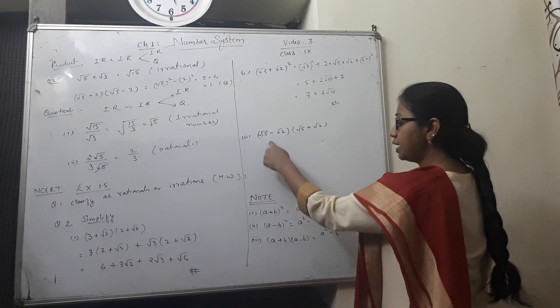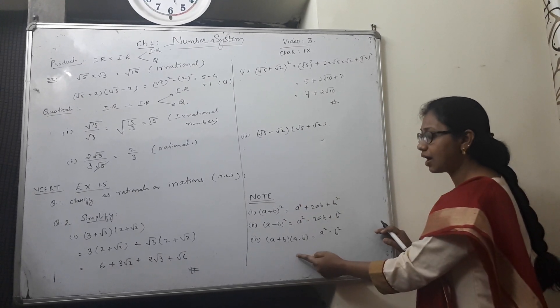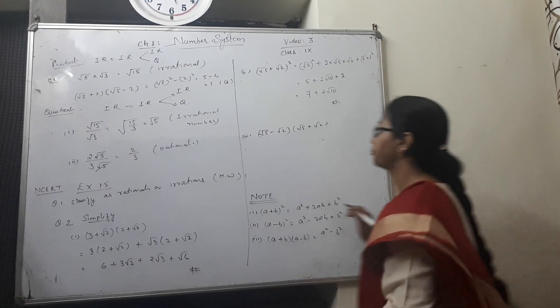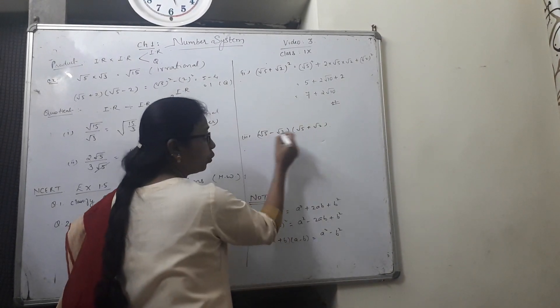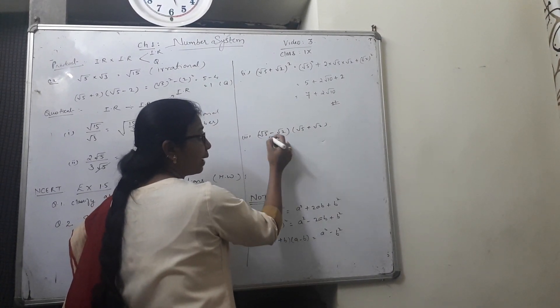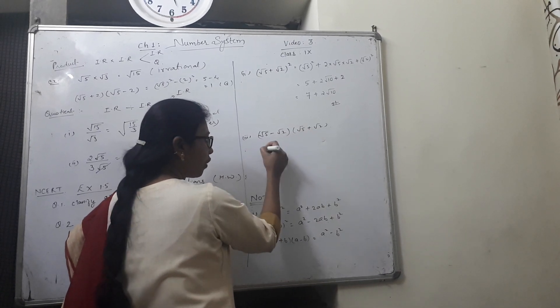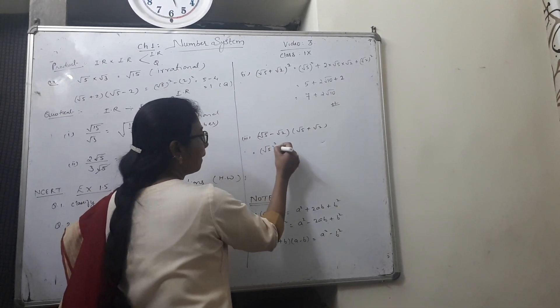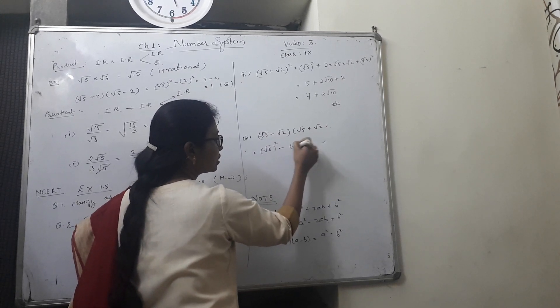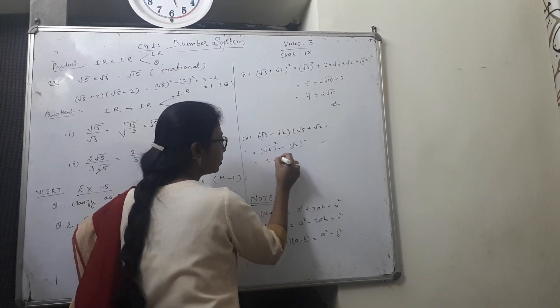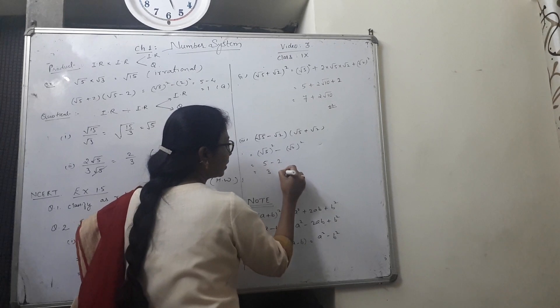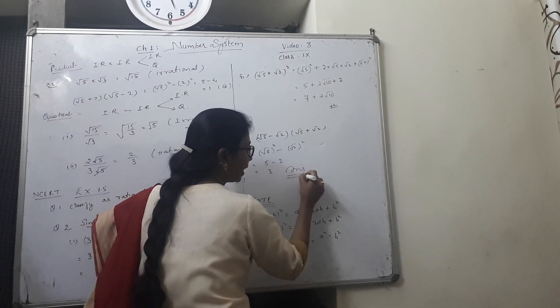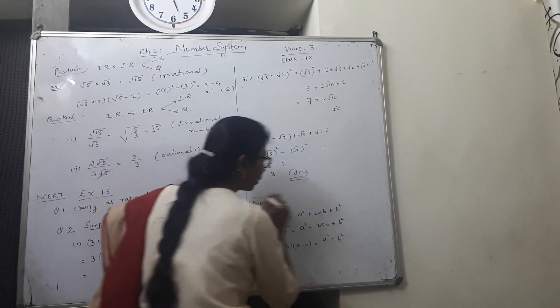For question number 3. Here we can easily use our identity number 3, a plus b, a minus b into a plus b form. So this is your root 5 whole square minus root 2 whole square gives you 5 minus 2 which is 3. So this is your final answer. Make a note on it.